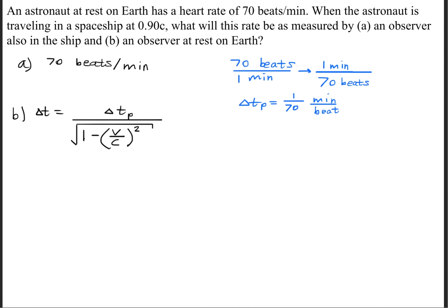Let's invert that rate so we get for every one minute we have 70 beats. We're going to use that for our proper time. So ΔtP equals 1 over 70 minutes per beat.